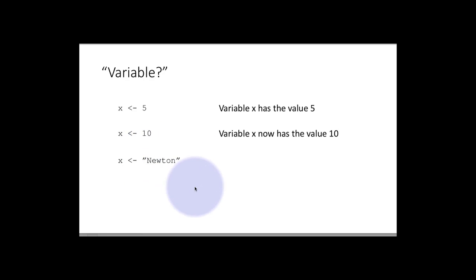So again, people who are familiar with certain other programming languages might be used to the notion that a certain variable can contain objects of only certain types. That's not the case with R.